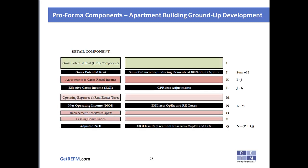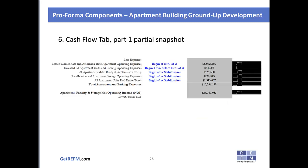If the apartment building has a retail component, the retail section of the cash flow tab follows the same structure: gross potential rent adjusted to effective gross income, minus operating expenses and real estate taxes to reach NOI, minus replacement reserves, capex, and leasing commissions specific to retail, arriving at adjusted NOI for the retail piece. A partial snapshot shows operating expenses and real estate taxes broken out into various line items.